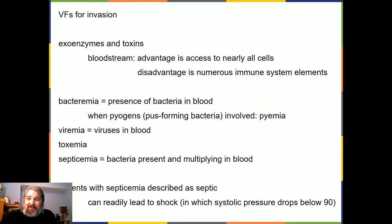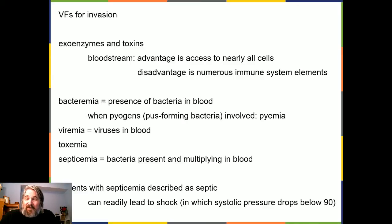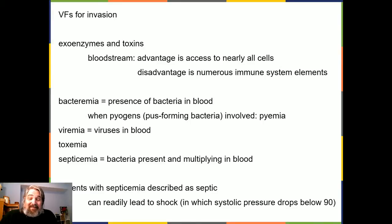Virulence factors for invasion include exoenzymes and toxins. The bloodstream is a great place to put a toxin because you have access to nearly all cells, though you also have numerous immune system elements floating there. Bacteremia is the presence of bacteria in blood. When those bacteria are pyogenic (pus-forming), it's pyemia. Viremia is viruses in the blood; toxemia is toxins in the blood. Septicemia means bacteria are not only present but multiplying — patients are described as septic — and it can readily lead to shock, with systolic pressure dropping below 90.